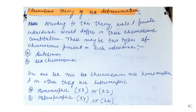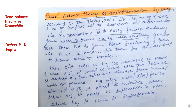According to the chromosome theory, male and female individuals differ in their chromosome constitution. There may be two types of chromosomes present in individuals: autosomes and sex chromosomes. In one sex, two sex chromosomes can be homomorphic, and in the other sex they can be heteromorphic. We discussed this in detail in the first part of this lecture.